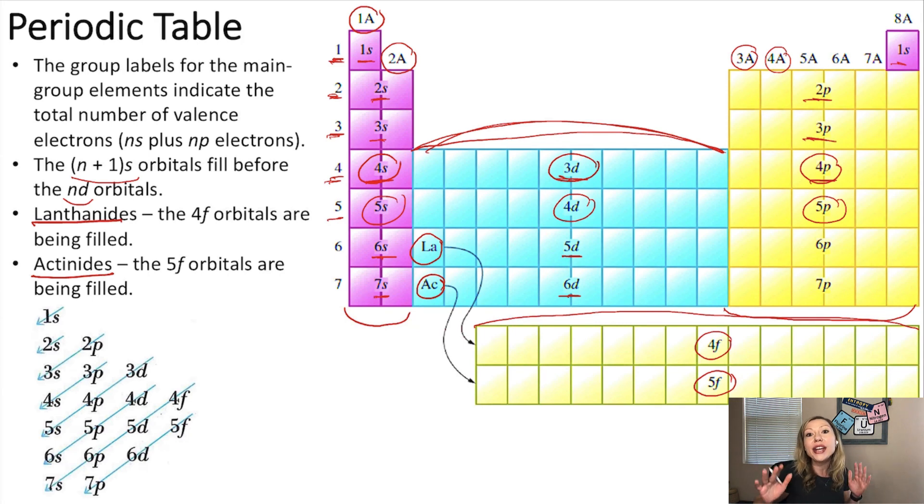Another thing. Why do we fill up the 4s before the 3d? Well, we say that the 3d is actually higher in energy than the 4s, but it is a little bit more complicated than that. I'm going to make a separate video on this. I hope this makes sense. Electron configurations are a lot of fun. Just practice, practice, practice, and it's going to go easy for you. See you in the next video.